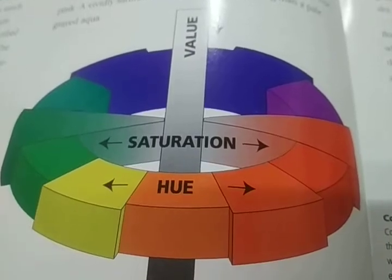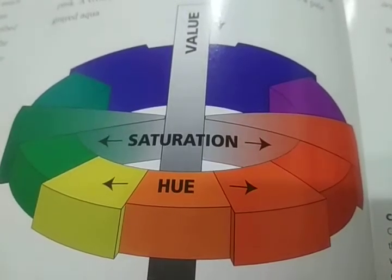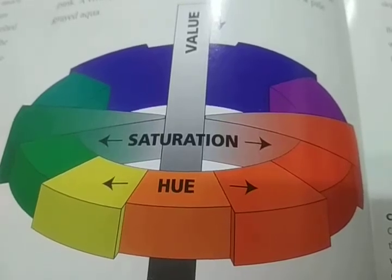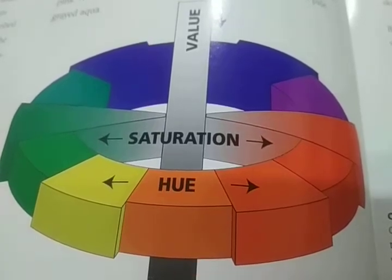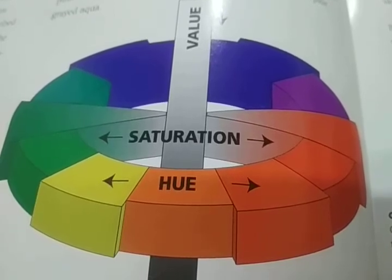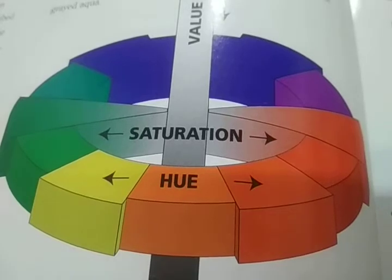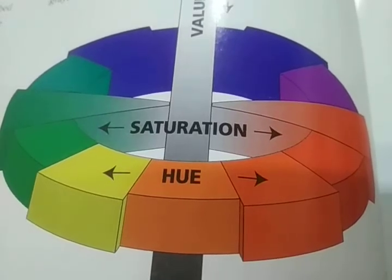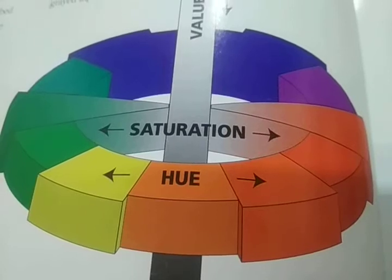First, what is hue? Hue and color can be used interchangeably. Red, yellow, and blue are the primary colors. Green, orange, and violet are the secondary colors. Tertiary colors are a mixture of two secondary colors.